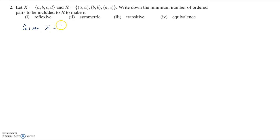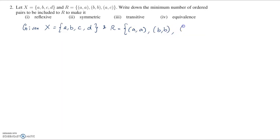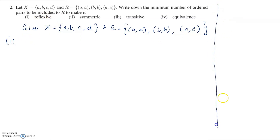So given to us: X = {a, b, c, d} and R is the set of ordered pairs (a,a), (b,b), (a,c). Now first we need to find what ordered pairs are required to make it reflexive. Let's do some rough work here.